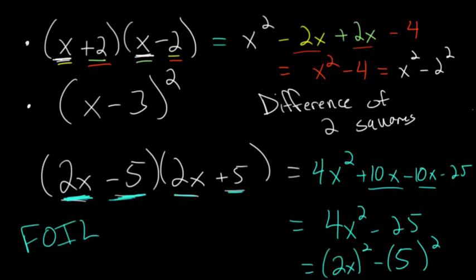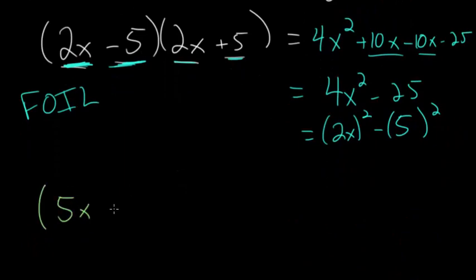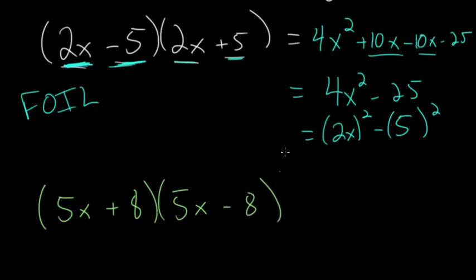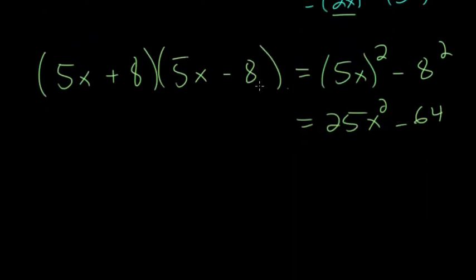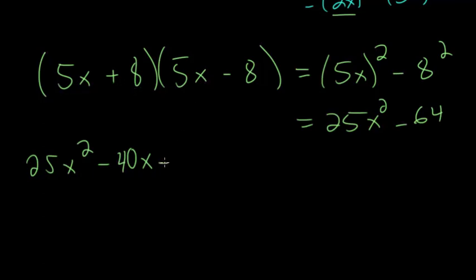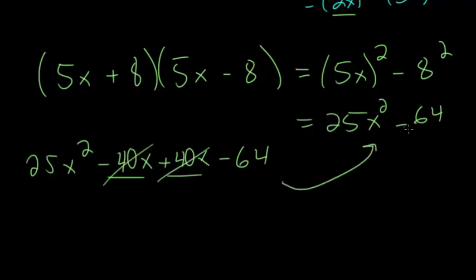We can generalize this pattern. For (5x plus 8)(5x minus 8), matching the previous pattern where we had (2x) squared minus 5 squared, our answer should be (5x) squared minus 8 squared, which is 25x squared minus 64. Verifying with FOIL: first terms give 25x squared; outer terms, 5x and minus 8, give minus 40x; inner terms, plus 8 and 5x, give plus 40x; last terms, plus 8 and minus 8, give minus 64. The middle terms cancel, confirming 25x squared minus 64.